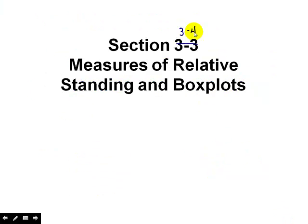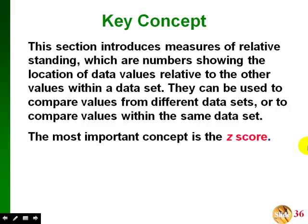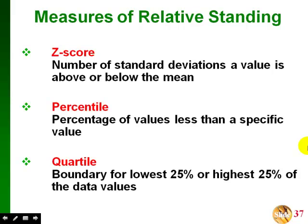Section 3.4 is about measures of relative standing and box plots. Relative standing means the location of data values relative to the other values within a data set, and we can use these to compare values from different data sets or even within the same data set. The most important measure of relative standing we'll talk about is the Z score. We'll also discuss percentiles and quartiles, and we'll talk about a new statistical graph called a box plot. The Z score is the number of standard deviations a value is above or below the mean. A percentile is the percentage of values less than a specific value, and a quartile is a specific kind of percentile that gives a boundary for the lowest 25% or the highest 25% of the data values.